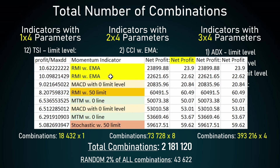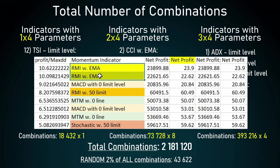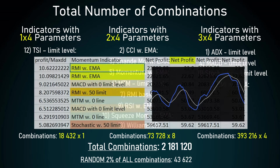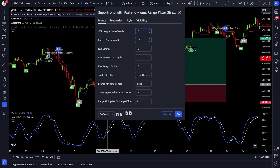Let me know in the comment section if you want to see all 8 backtest results that made the cut and I will make a separate video of those, as it would take too long to show them all in this video. The top 2 results were generated by the RMI or Relative Momentum Index with an EMA.